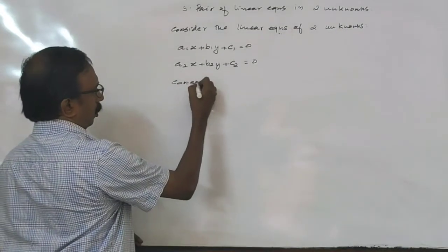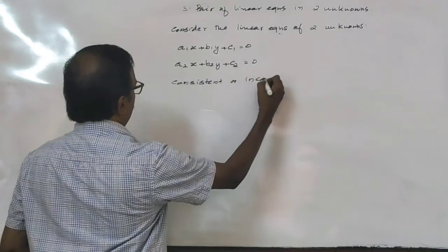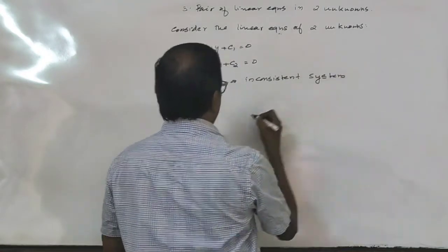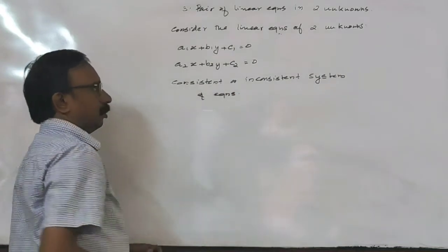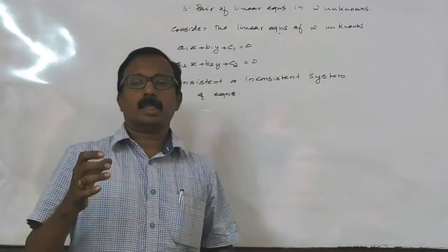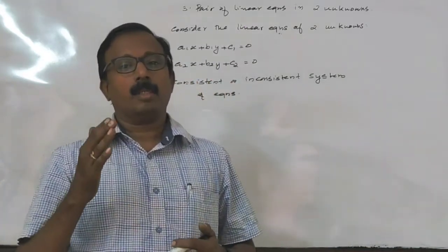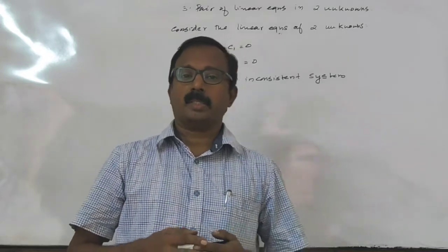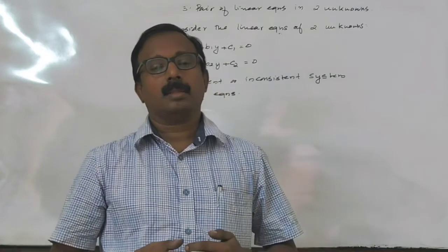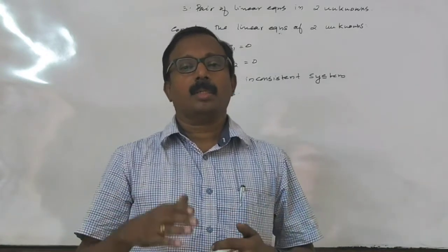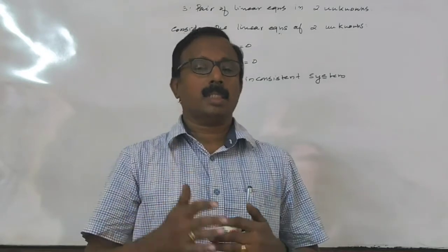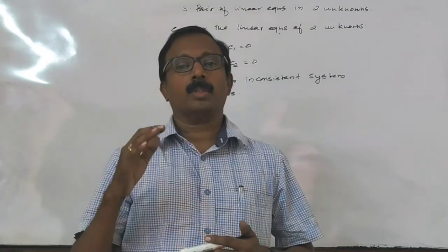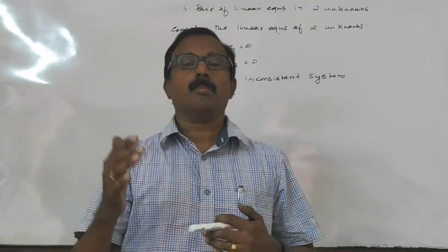Now, consistent or inconsistent system of equations. Consistent means a system of equations is said to be consistent if it has one or more solutions. If a system has no solution, then the system is known as an inconsistent system of equations. If a system is consistent, it has one solution or infinitely many solutions.